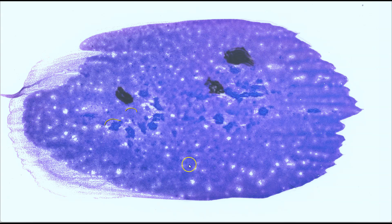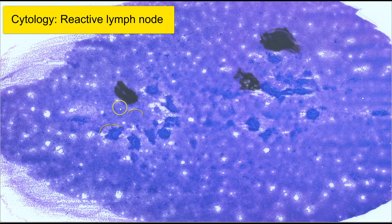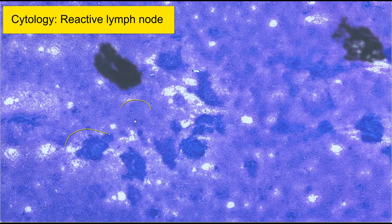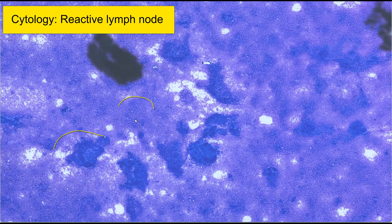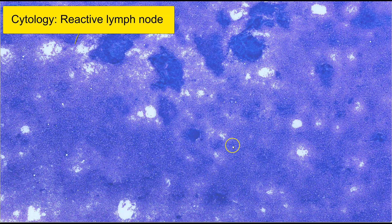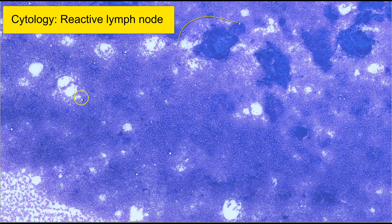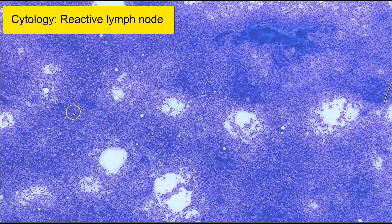Hello, this is a virtual microscopy slide of an FNA of a reactive lymph node. We are looking at the air-dried smear, and this particular smear is stained with the haemocolor stain. At low magnification, we can appreciate that there are some tissue fragments, and in many areas there is actually a more dispersed population of discohesive cells. Let's look at the discohesive cells.